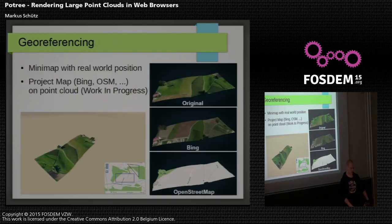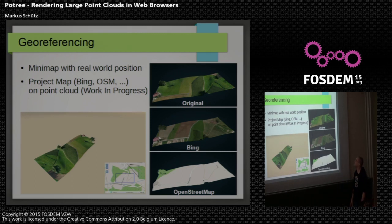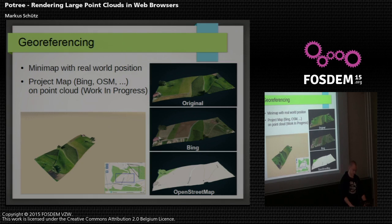Georeferencing is possible as well. Here, for example, is a georeferenced point cloud. At the bottom right is OpenStreetMap showing the extent of the point cloud and also the current camera position and direction. The screenshots to the right show an example I'm currently working on where I use OpenLayers to load map data and project the map data onto the point cloud.